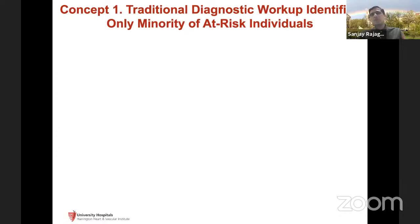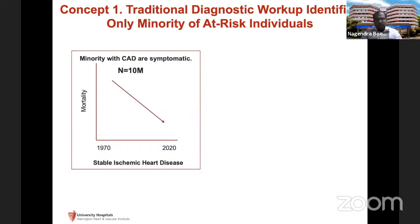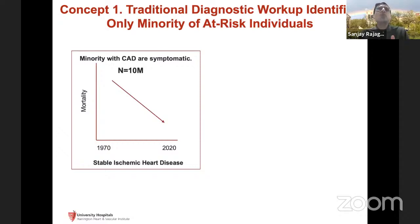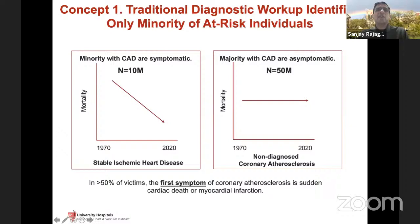The first concept: traditional diagnostic workup identifies only a minority of at-risk individuals. Risk factor approaches or even stress tests miss a lot of patients. The minority of patients with coronary artery disease are symptomatic — most are asymptomatic — and the first presentation is often a myocardial infarction. In the United States, roughly 50 million have coronary artery disease but only 10 million of the 340 million population are truly symptomatic.